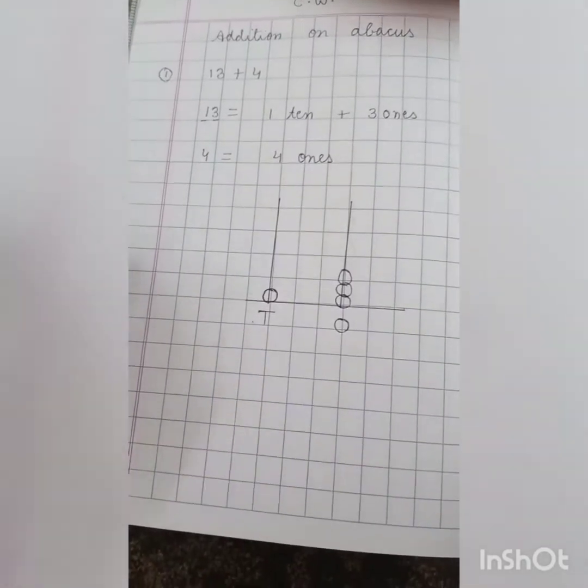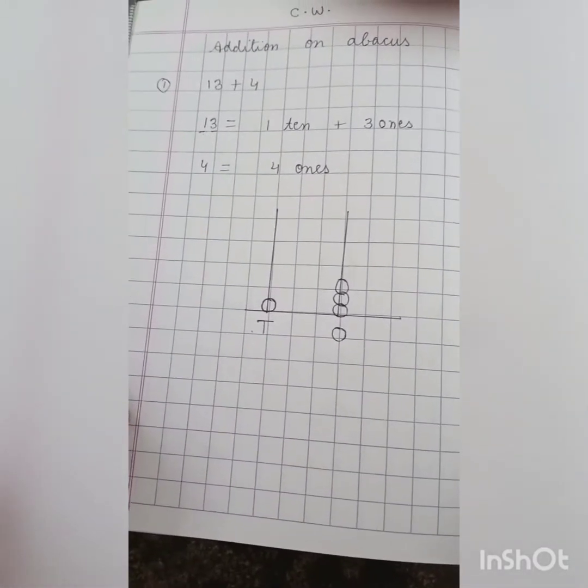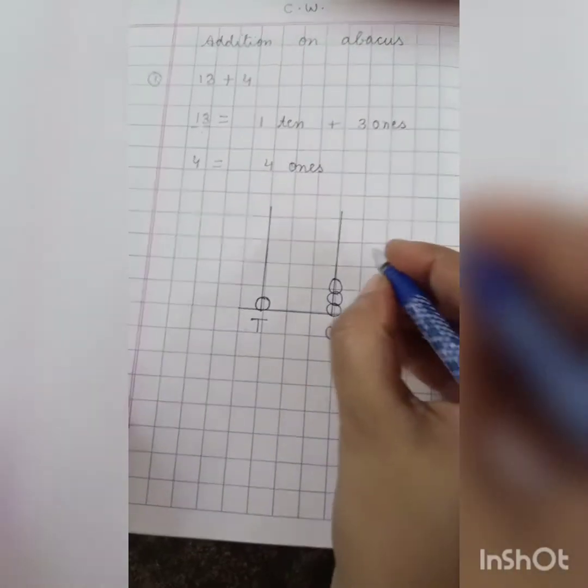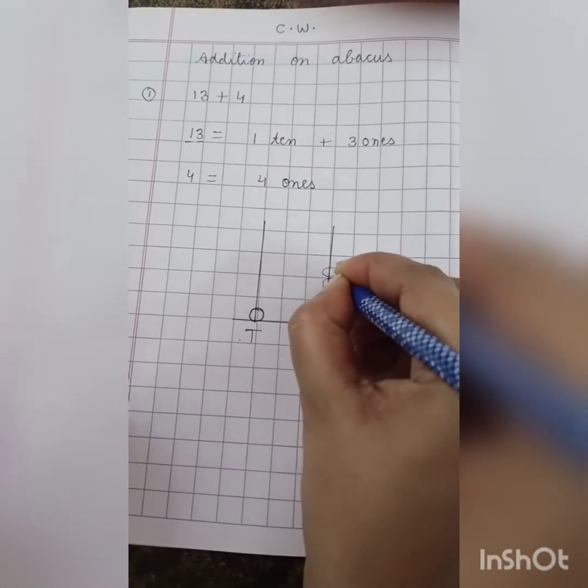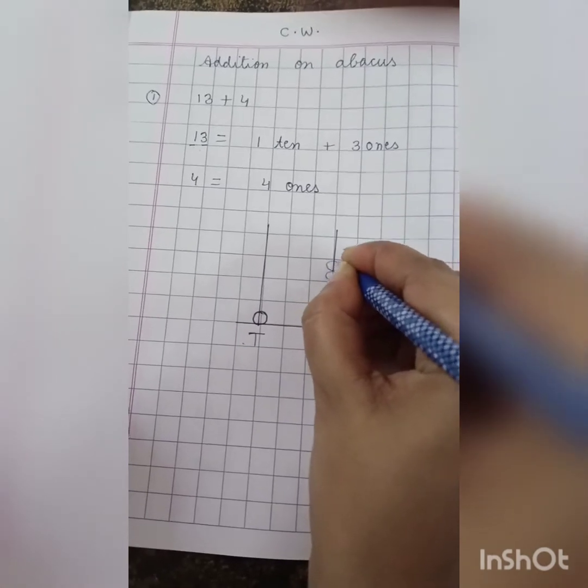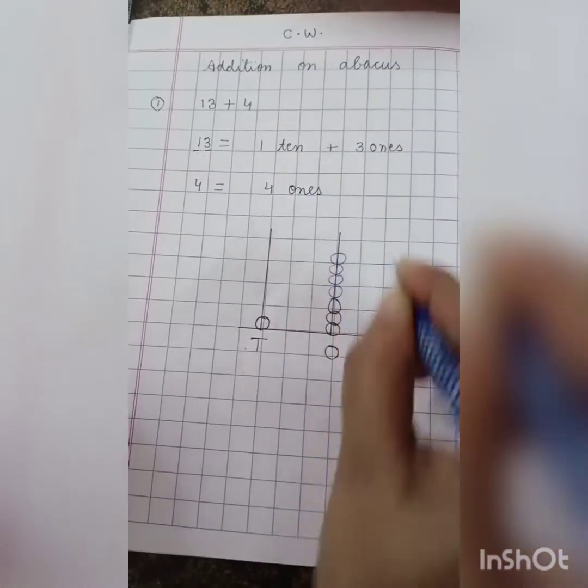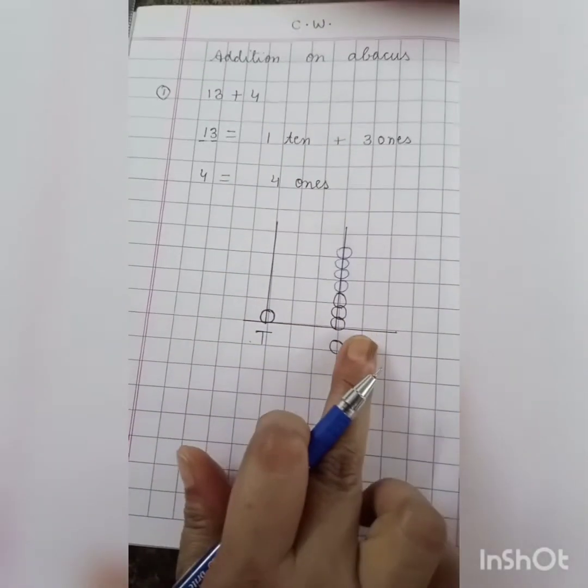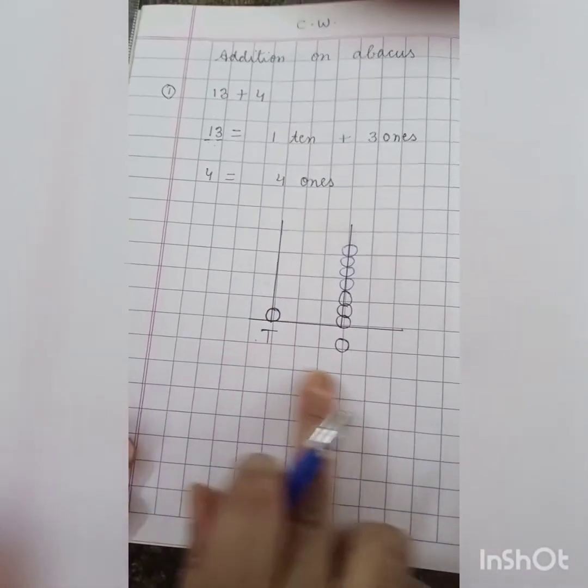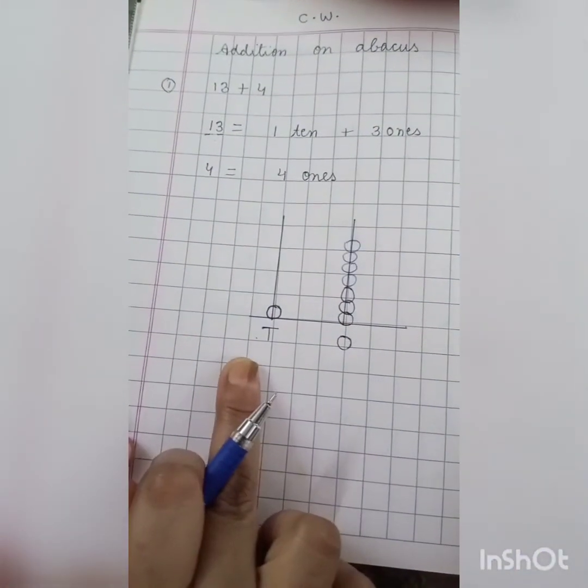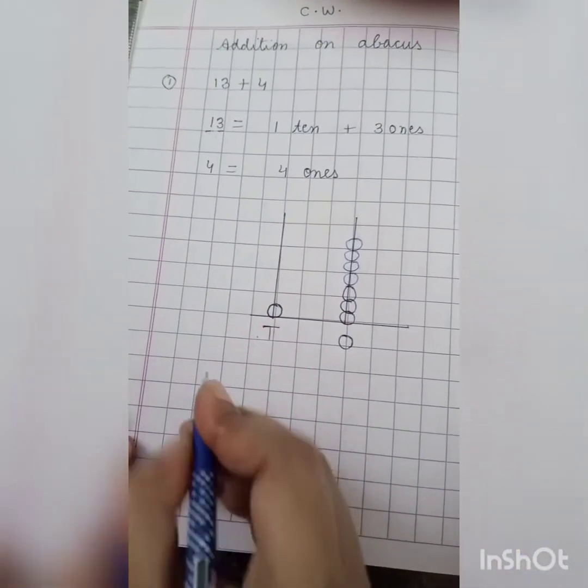Now I have to add 4 ones. So what I am going to do? I will draw 4 balls here on the one spike, 1, 2, 3 and 4. So after adding 4 ones to this number 13, now this abacus represents which number? 1 ten.